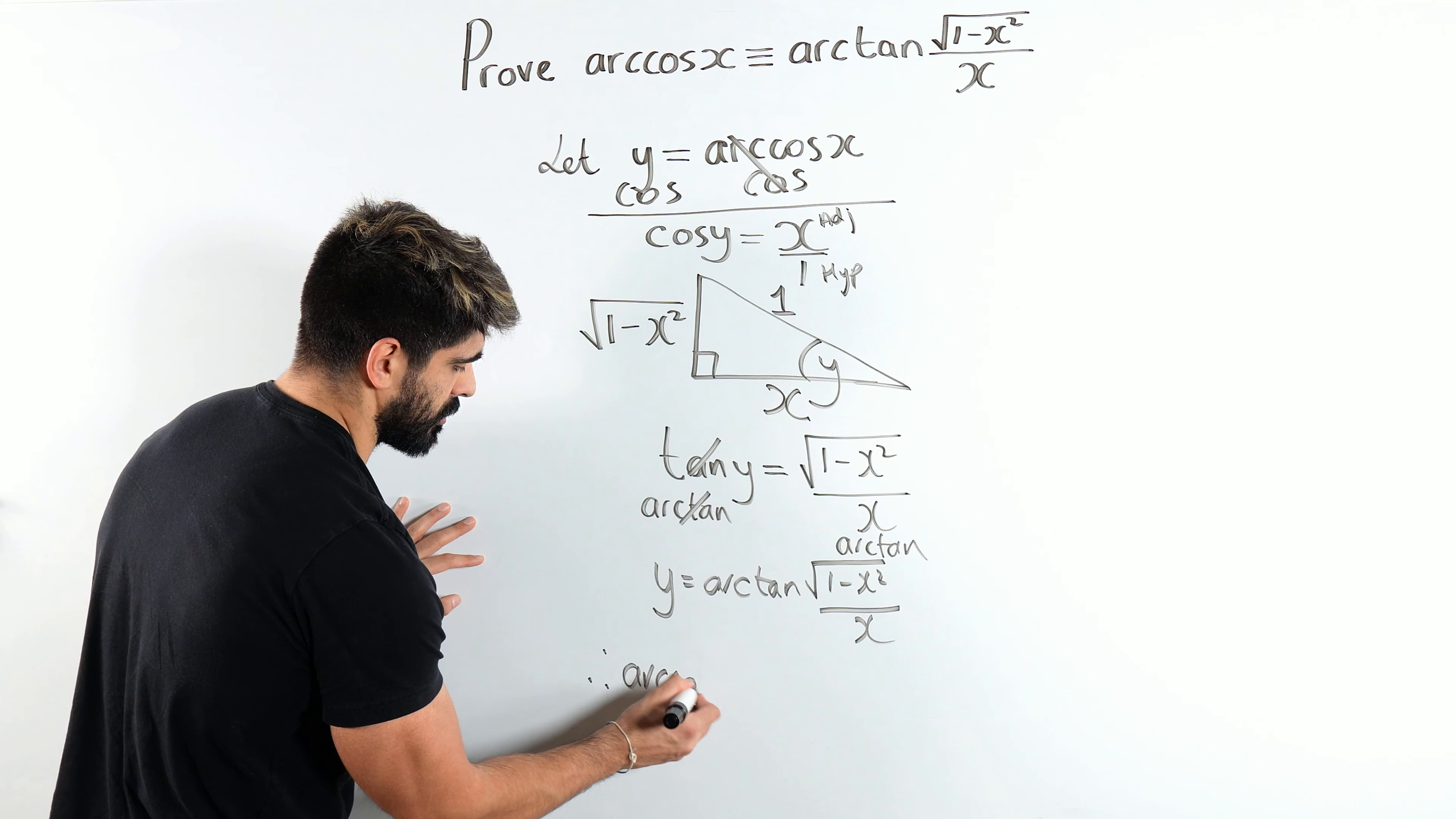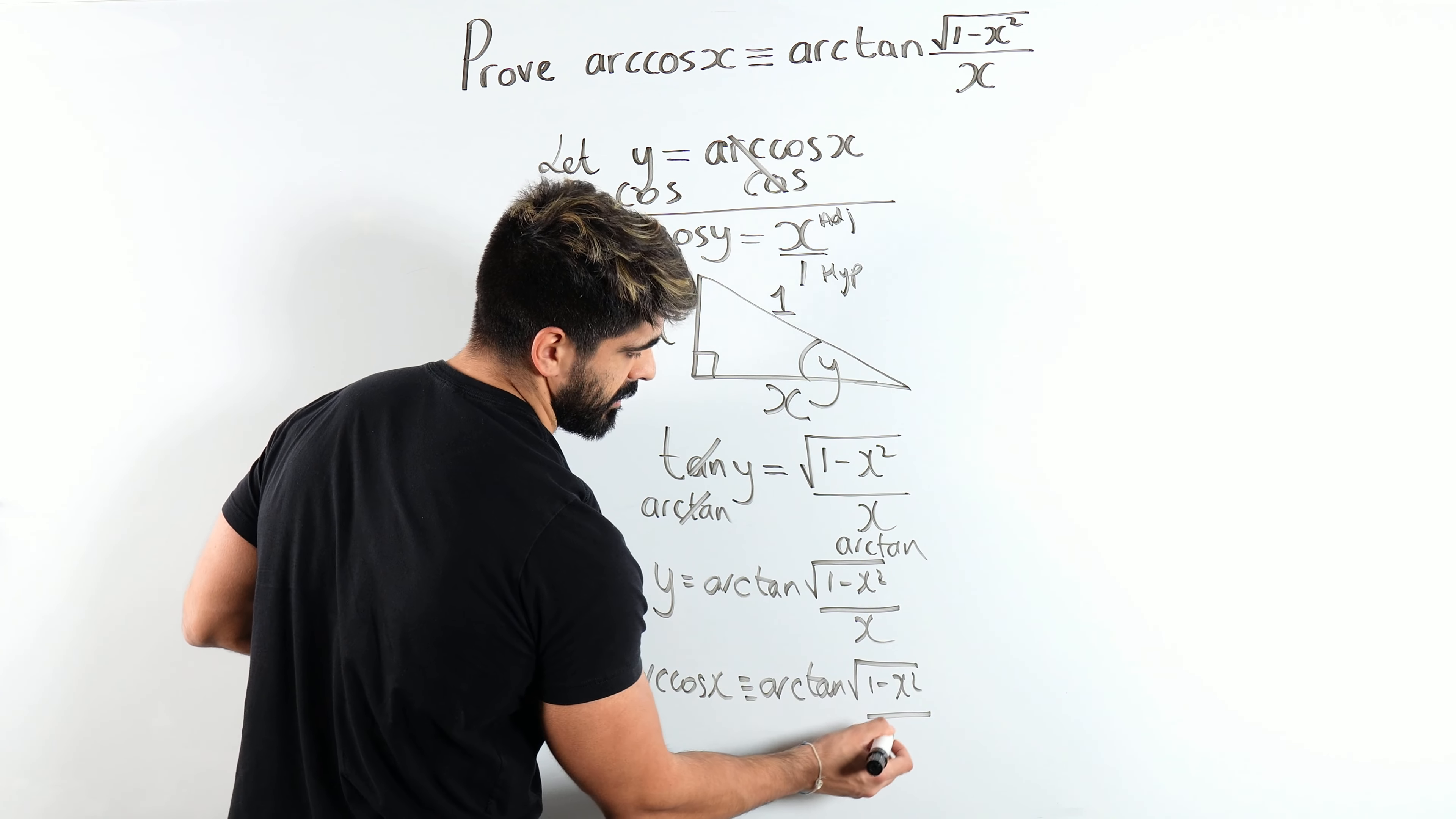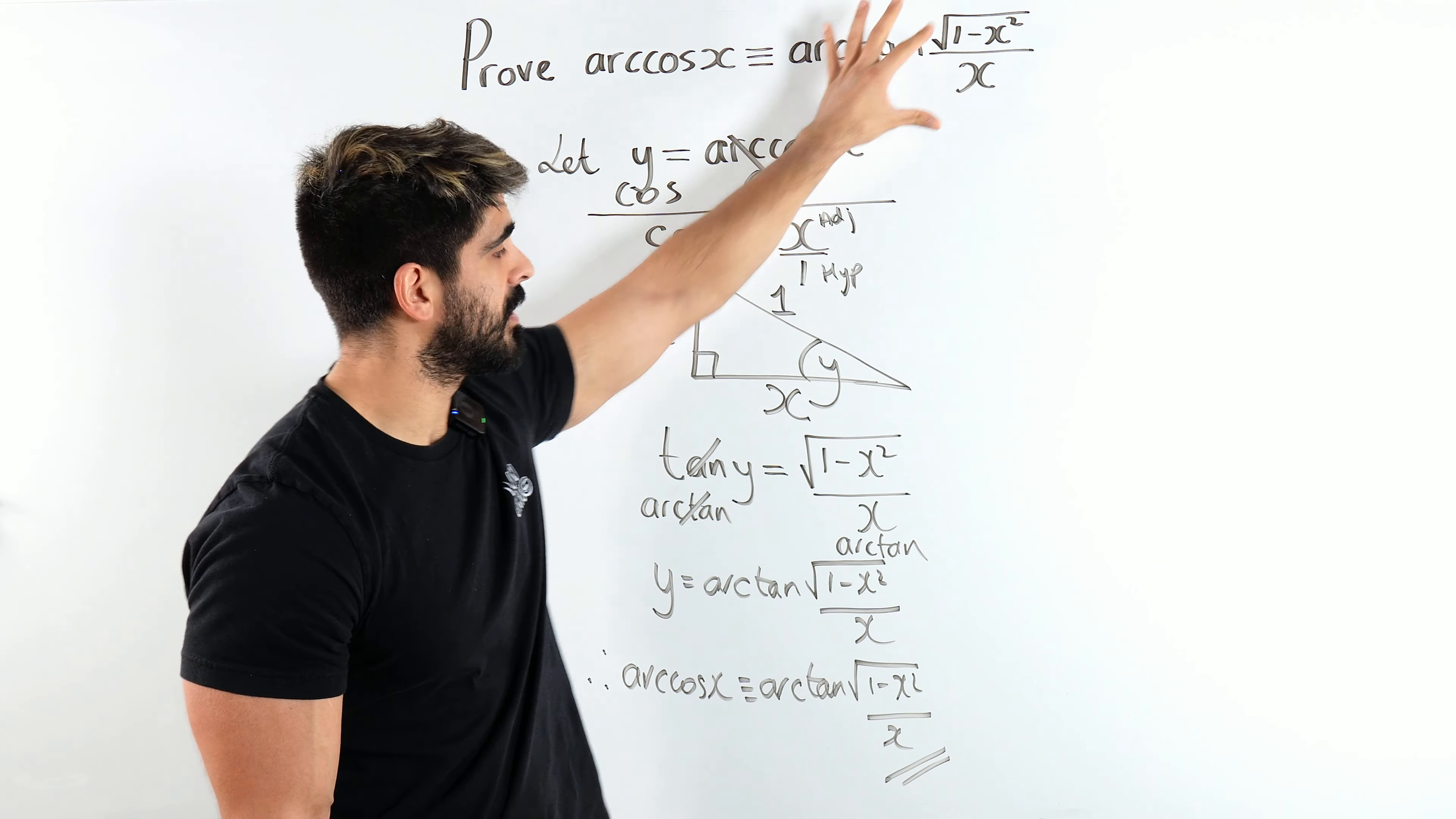But what did we say y was from before? It was arccos. Therefore, arccos x is equivalent to arctan root 1 minus x squared over x. Apologies for my pen running, but I think you guys can see. And that's proved.